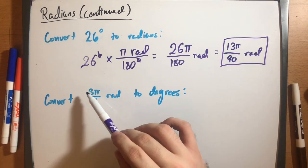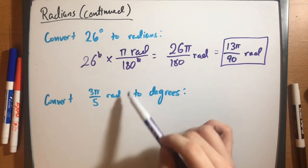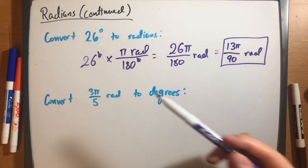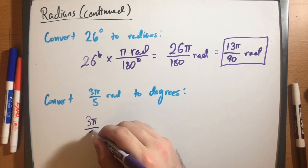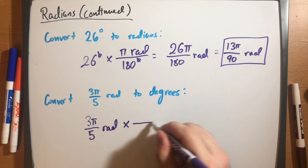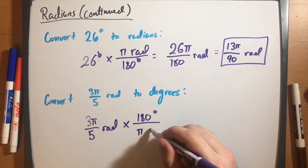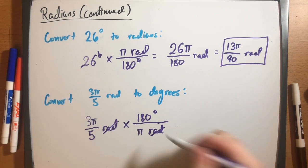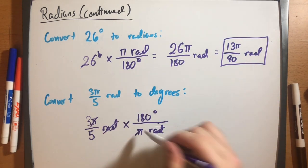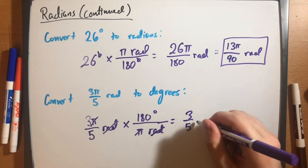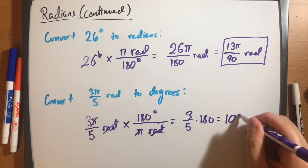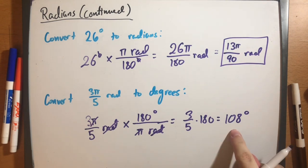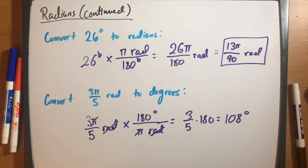Now let's convert 3 pi over 5 radians to degrees. We take 3 pi over 5 radians and multiply by 180 degrees divided by pi radians. The unit radians cancels, and in this case pi cancels as well. We're left with 3 over 5 times 180, which equals 108 degrees. So 108 degrees is the same angle measure as 3 pi over 5 radians.